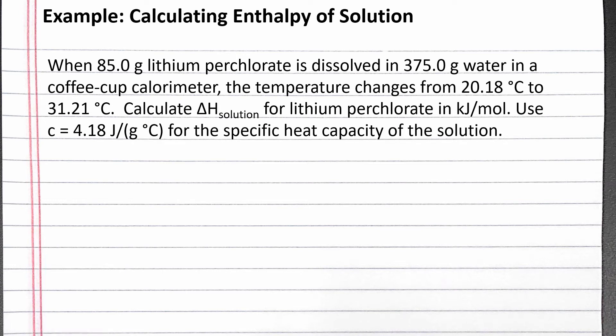In this example, we find the enthalpy of solution from experimental data using a coffee cup calorimeter. Our problem reads: when 85.0 grams lithium perchlorate is dissolved in 375.0 grams water in a coffee cup calorimeter, the temperature changes from 20.18 degrees Celsius to 31.21 degrees Celsius. Calculate the enthalpy of solution for lithium perchlorate in kilojoules per mole. Use C equals 4.18 joules per gram degree Celsius for the specific heat capacity of the solution.